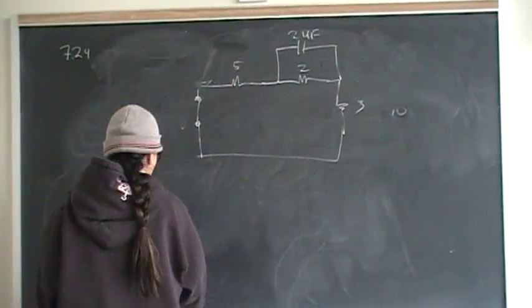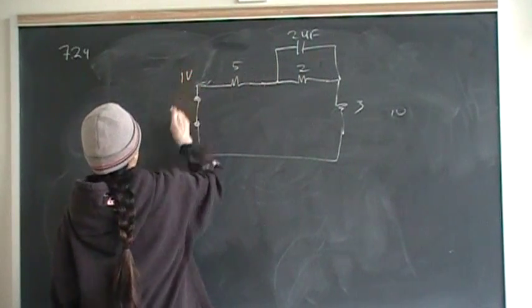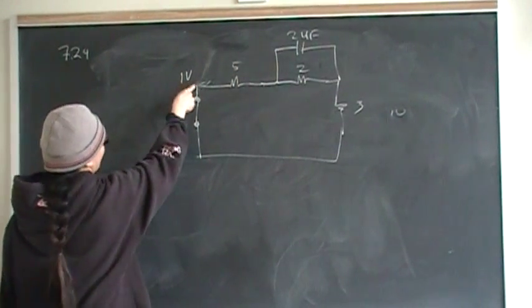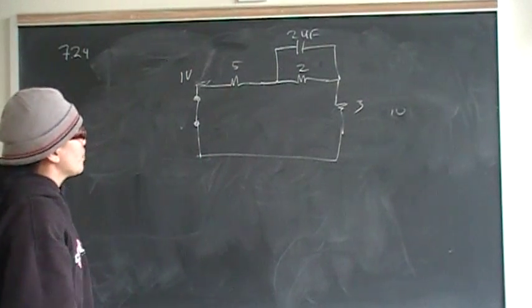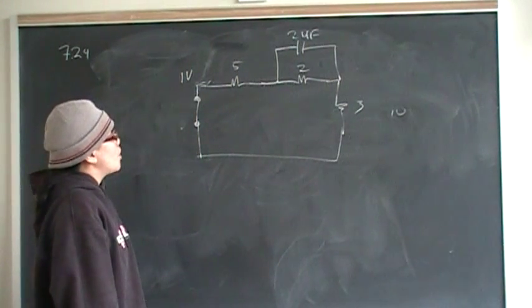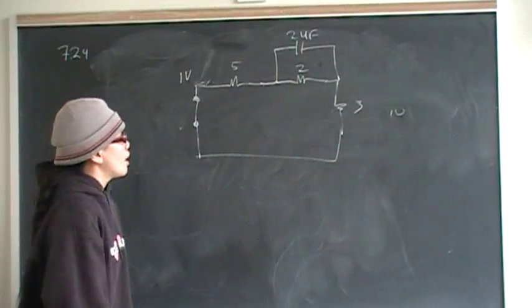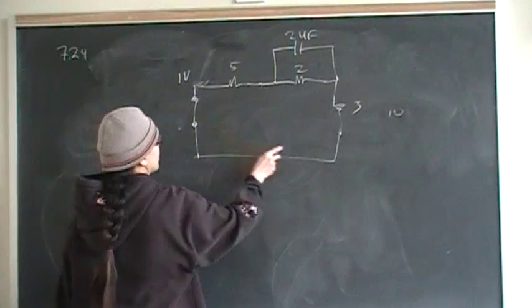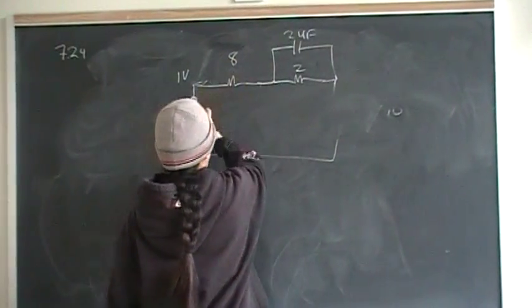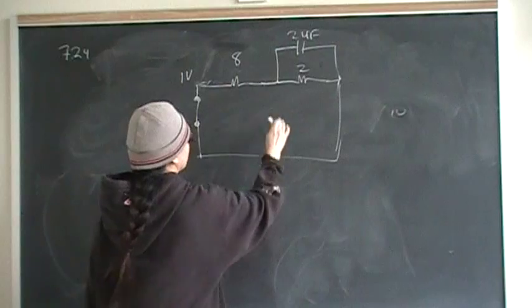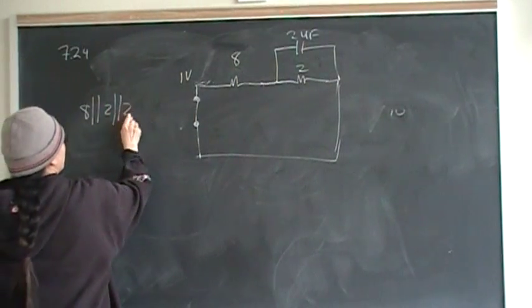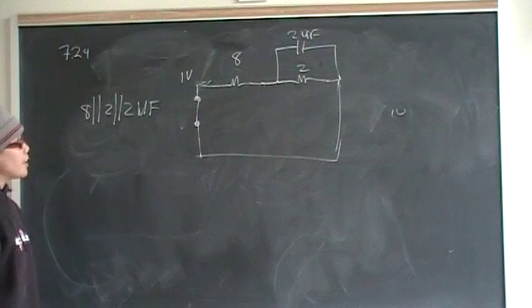We use KCL, and we need to know that the node voltage was 1 volt before the switch closed. If we put a voltmeter there when the switch was open, it would read 1 volt. Once the circuit closes, things change rapidly. The 5-ohm and 3-ohm resistors are in series, giving 8 ohms. That 8 ohms is in parallel with the 2-ohm resistor, which is in parallel with the 2-microfarad capacitor. So what we really have is 8 in parallel with 2, in parallel with 2 microfarads.